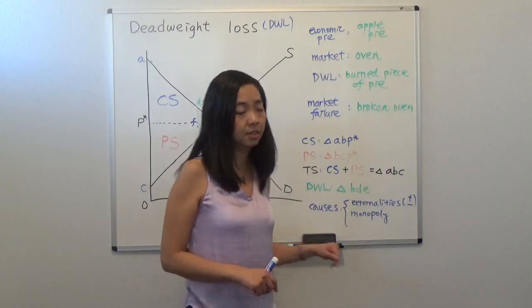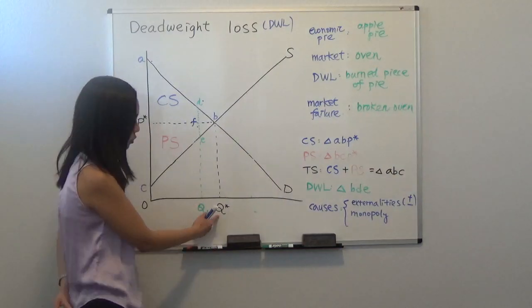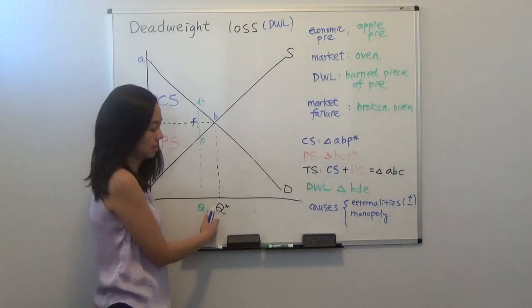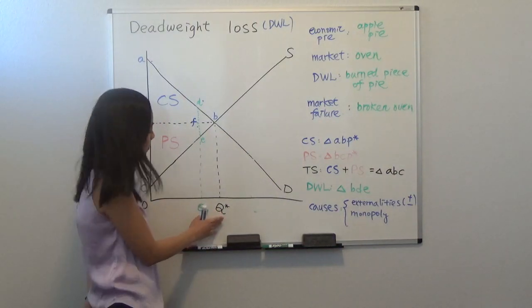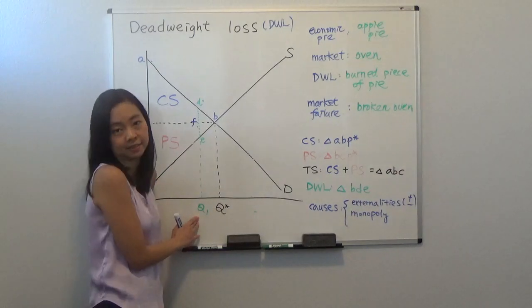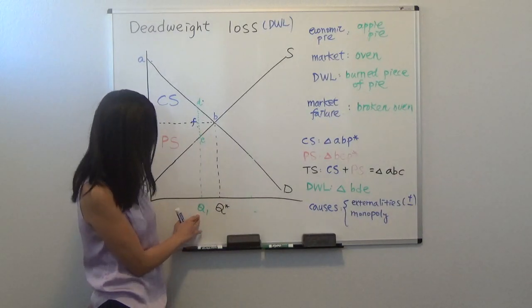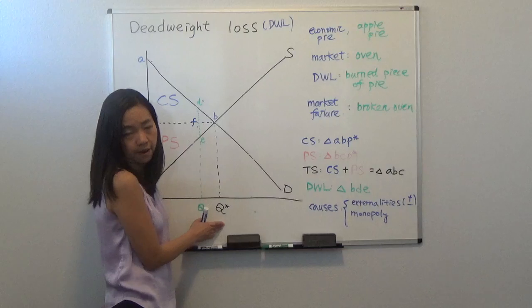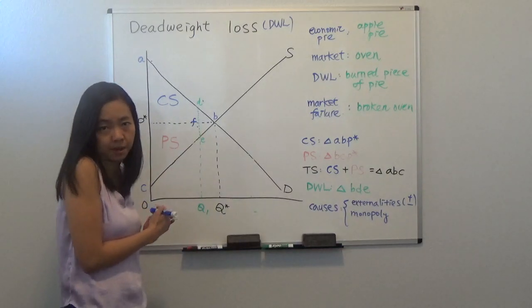So for whatever reason, if you're not producing Q star, that's the best quantity. Suppose you're producing less than that, typically that's a case of monopoly. You're producing Q1 instead of Q star. Then it's going to shrink your economic pie.